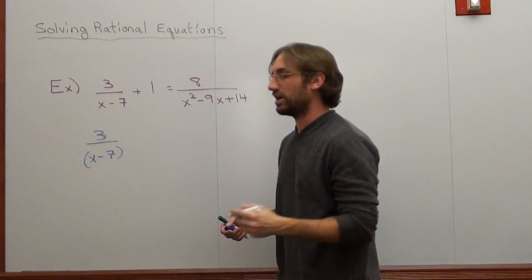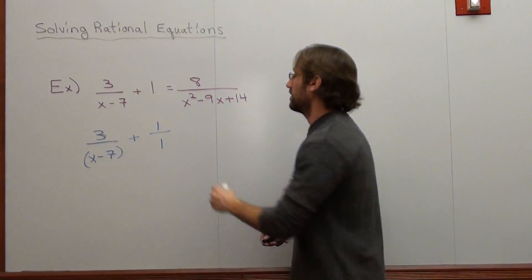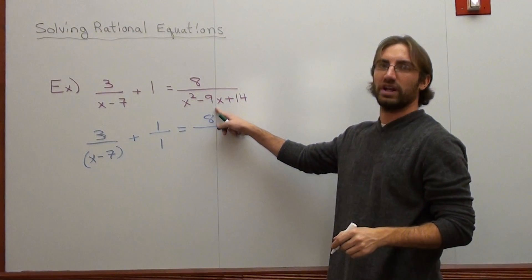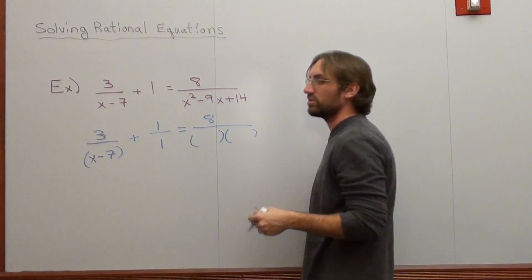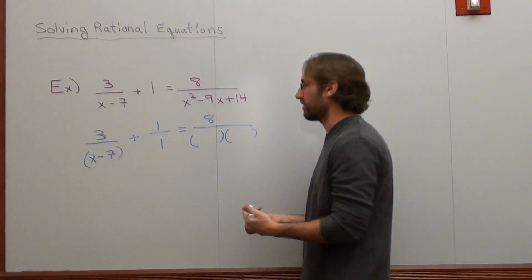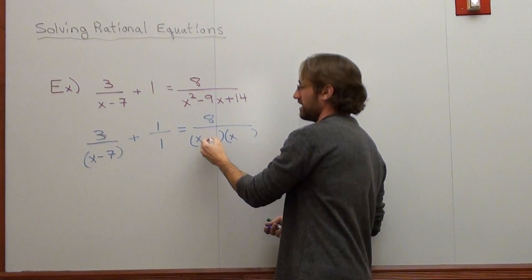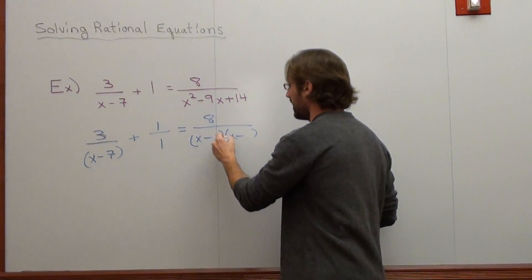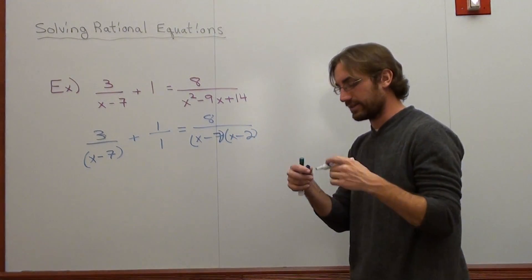I've got 3 over x minus 7 plus, and let's just put 1 over 1 for fun, equals 8 over, and I want to factor x squared minus 9x plus 14. And students aren't always able to do that off the top of their head. That's when the talk about factoring is difficult. x times x is x squared. What times what is a positive, but adds up to be negative? It's negative, negative. What times what is 14, but adds up to be negative 9? That would be negative 7 and negative 2.